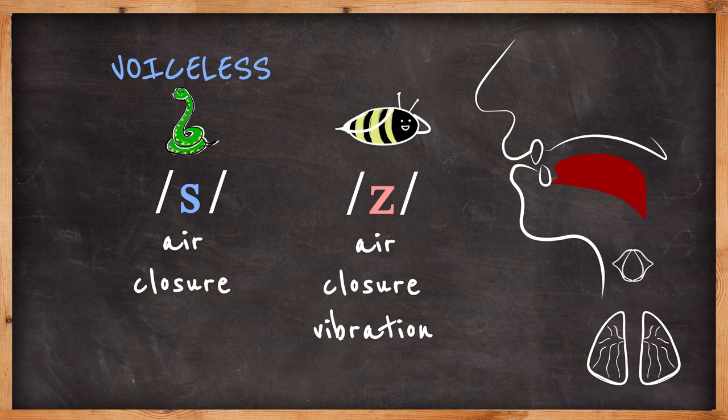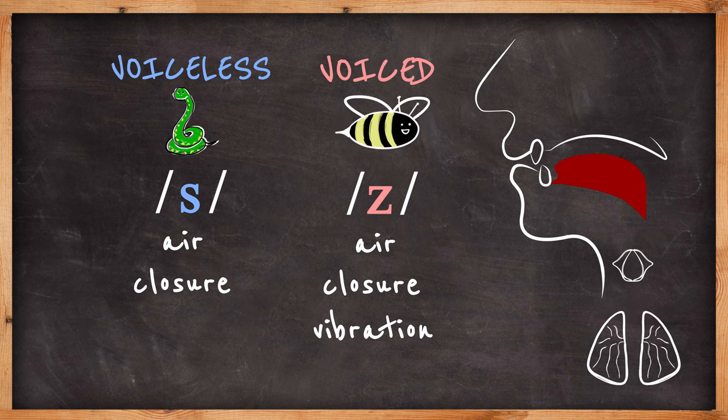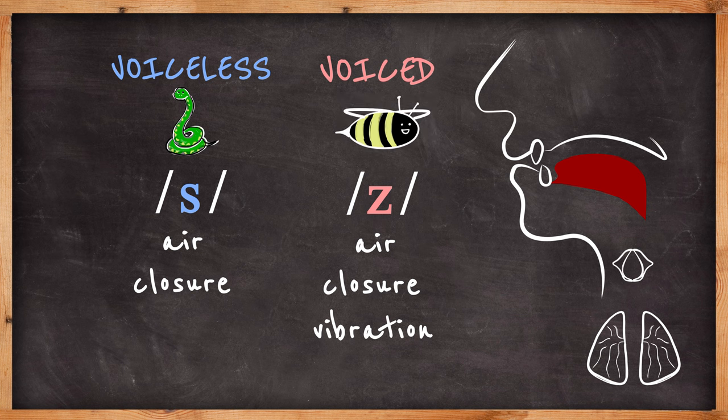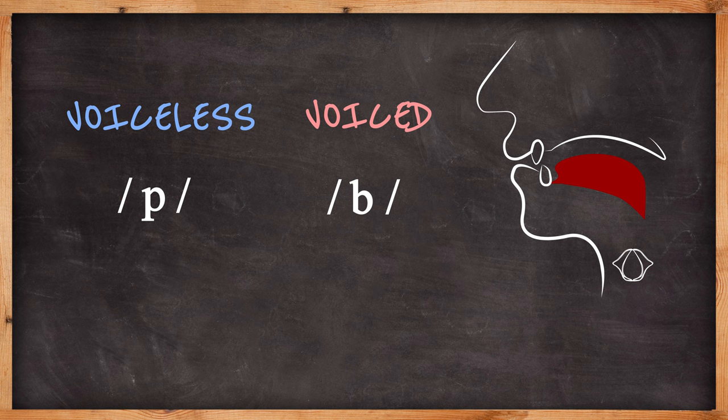So sss is a voiceless sound, no vibration. Zzz is a voiced sound, vibration. All speech sounds can be defined in this way. Think p which is voiceless and b which is voiced. Many sounds come in pairs like this.